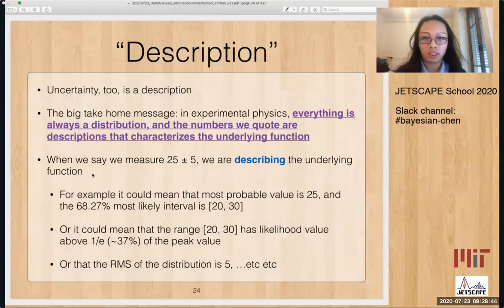As an example, when we say some experiment measures something to be 25 plus minus 5, what we're actually doing is describing the underlying likelihood function. So for example, it could mean that the most probable value is 25 and 68 percent most likely interval is 20 to 30. It could also mean that a range 20 to 30 has likelihood value above some threshold, or it could also mean that the RMS of the distribution is 5.